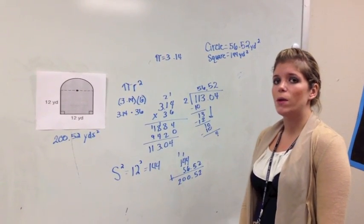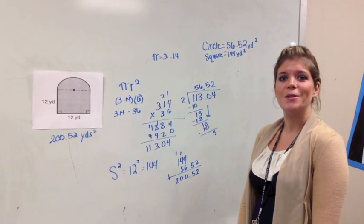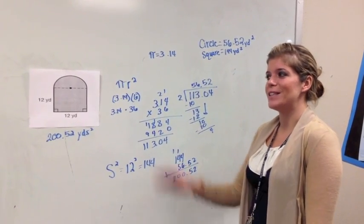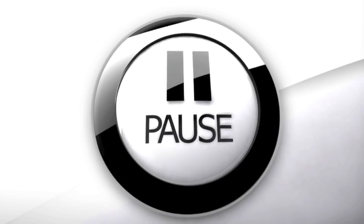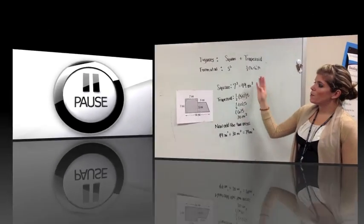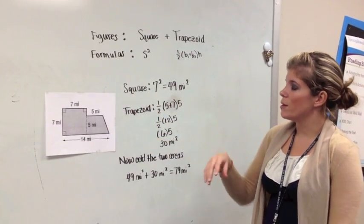Let's try the third example on your own. So go ahead and pause the video and try example number three on your own. Okay, so for example three, we noticed we had two figures, a square and a trapezoid.